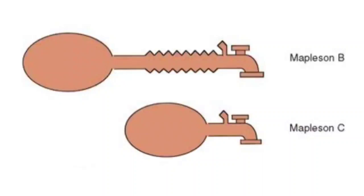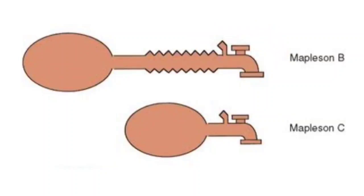These are Mapleson B and C circuits. As usual, these circuits also have four parts, but the difference from other circuits is the position of the APL valve and fresh gas flow inlet, which are at the patient end, while the reservoir bag is at the machine end. Another difference is that the corrugated tubes are shorter in these circuits, with the C circuit having a particularly short tube, as you can see in the picture.